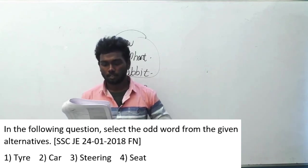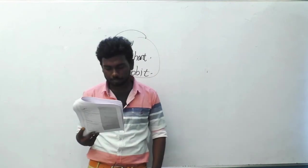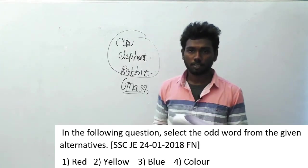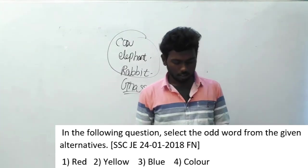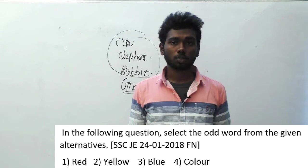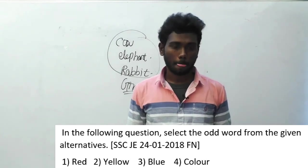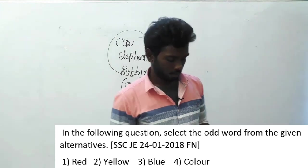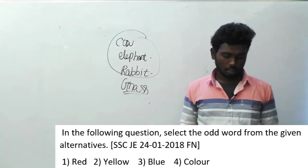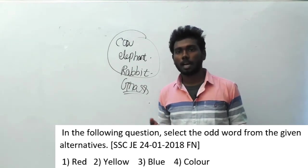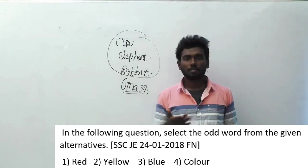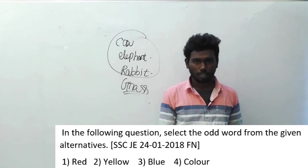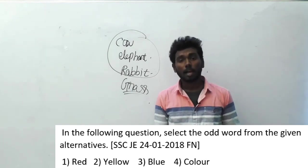Question number 169. In the following question, select the odd word from the given alternatives. This question was asked in SSC JE, 24th January 2018, forenoon session. Options are: red, yellow, blue, and color. The first three options are types of color, and the fourth one is color itself. So option D, color, is the answer for question 169.